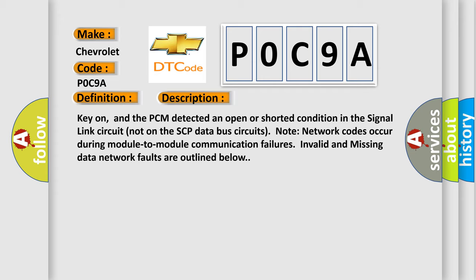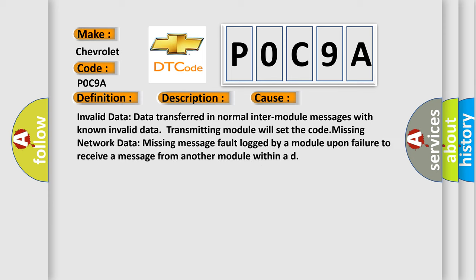Note: network codes occur during module-to-module communication failures. Invalid and missing data network faults are outlined below. This diagnostic error occurs most often in these cases: Invalid data - data transferred in normal inter-module messages with known invalid data, transmitting module will set the code. Missing network data - missing message fault logged by a module upon failure to receive a message from another module within a defined time.